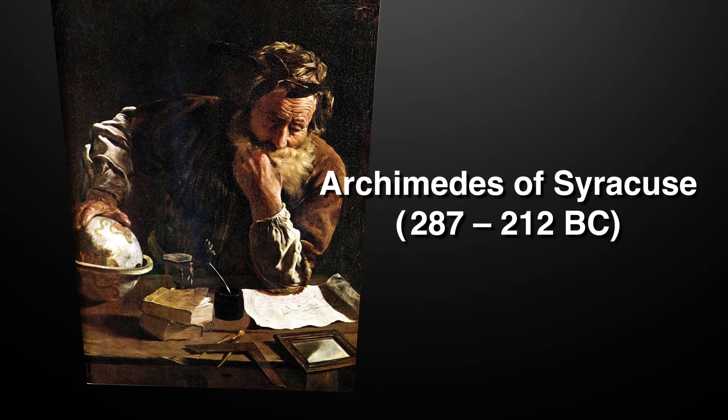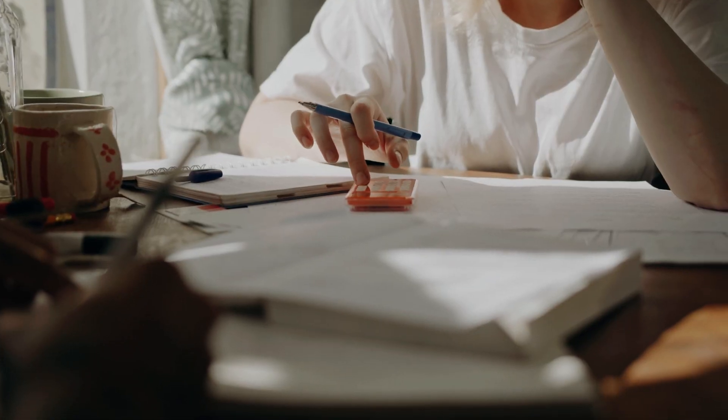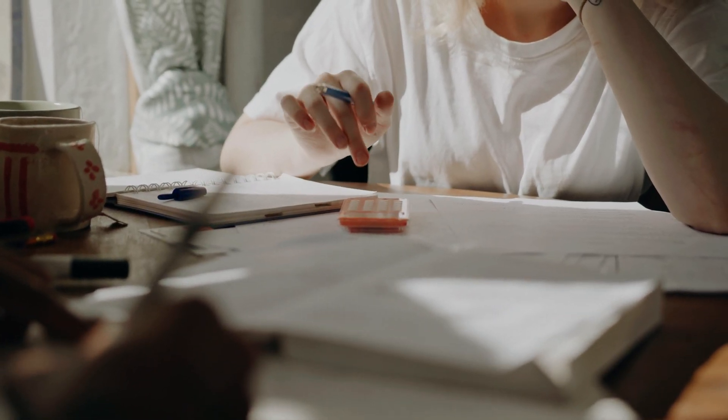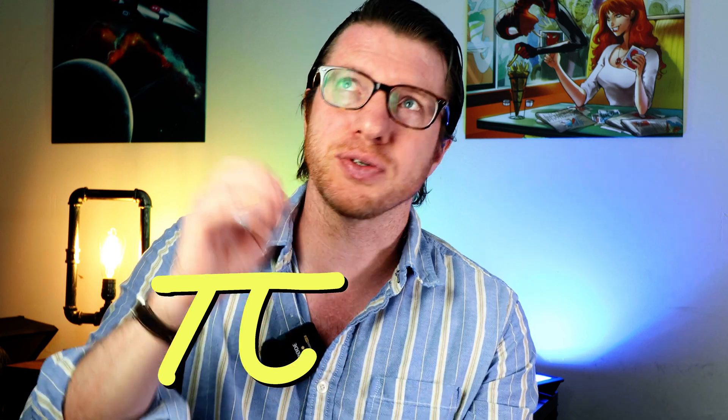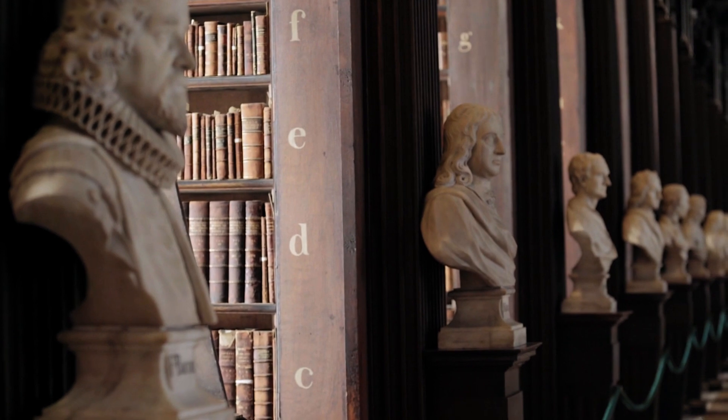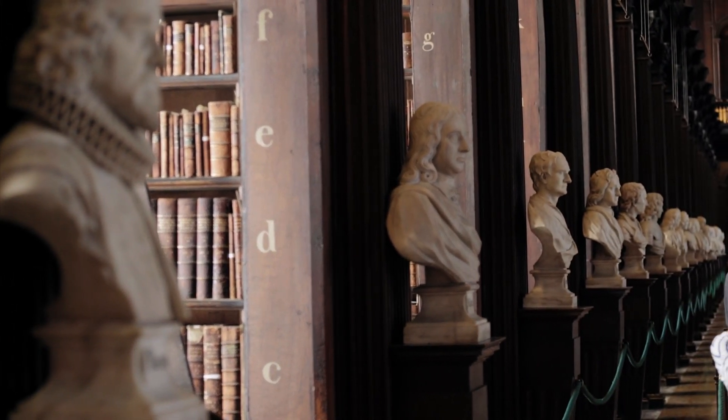Archimedes did a lot of work with pi before the Hindu-Arabic number system was invented. He didn't write pi as 3.1415; he started with 22 over 7 and developed a routine to generate new rational approximations of pi. So the question is: is the decimal expansion really the whole story of real numbers? And what are real numbers exactly?